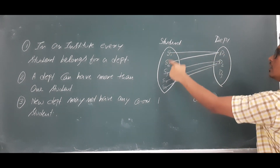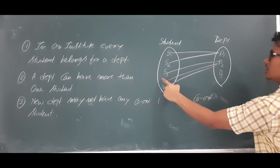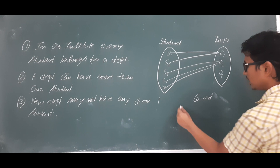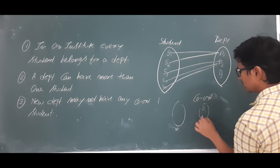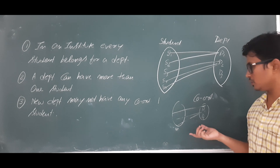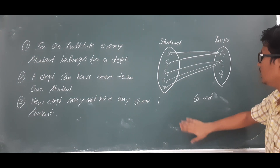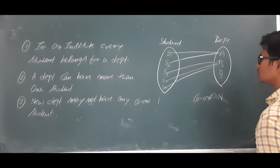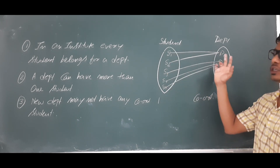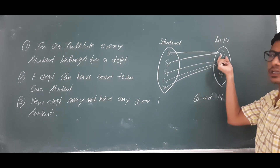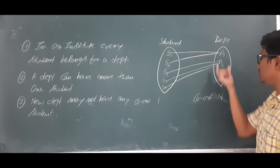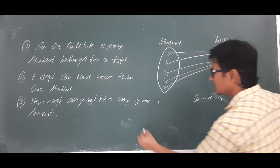What about the cardinality of the department? Department one has a relationship with two students. Consider a scenario where there are N students and two departments — all N students may belong to only department one. In that case, the cardinality of the department is N. We always go for the generalized case, so the department cardinality is N.